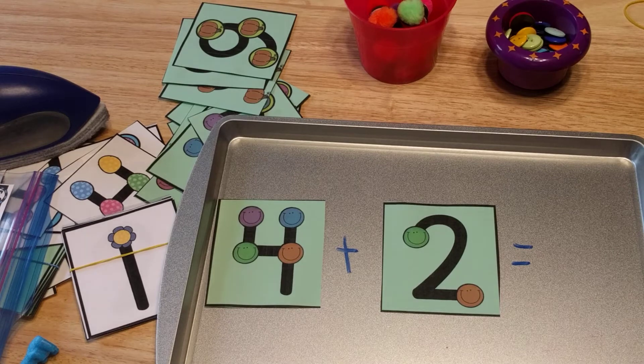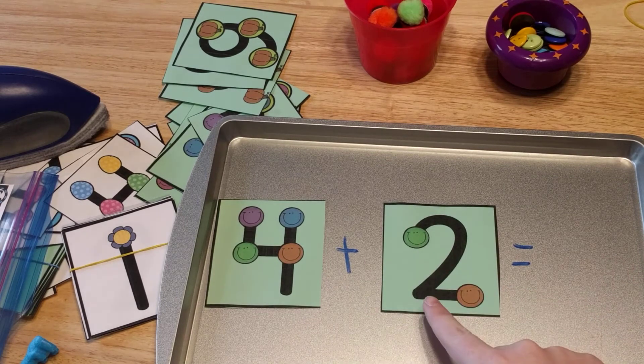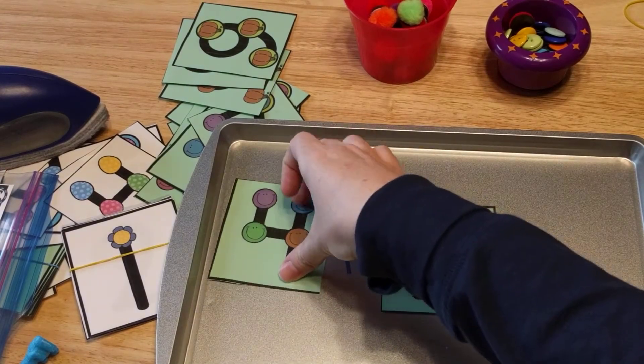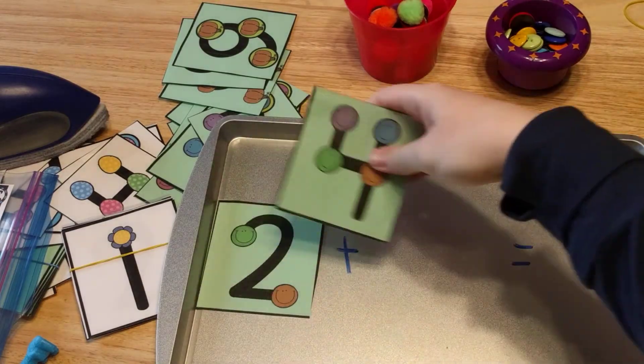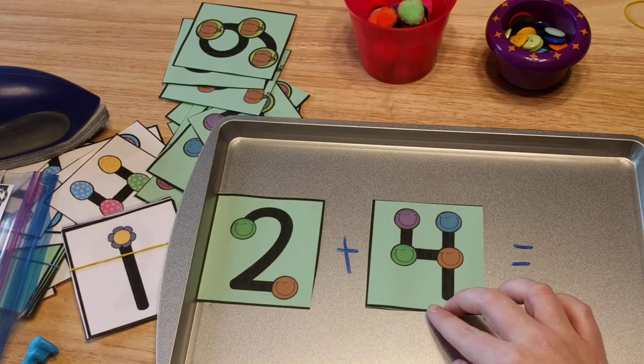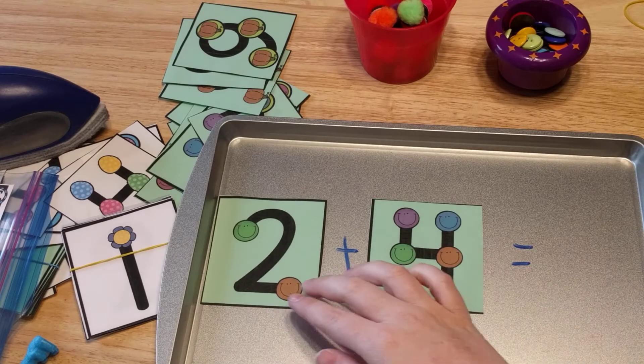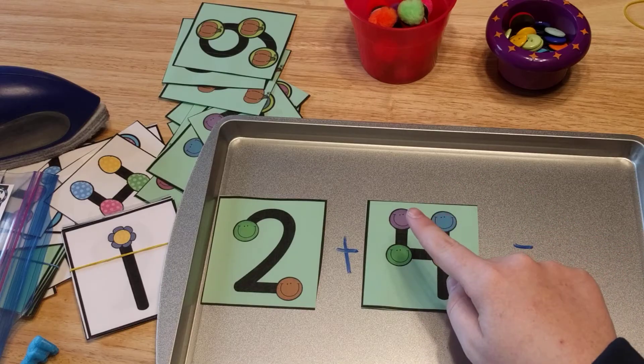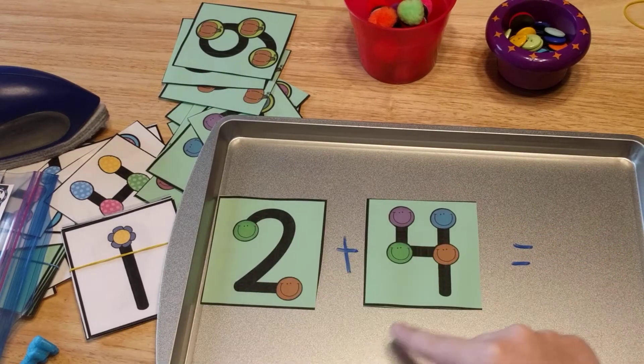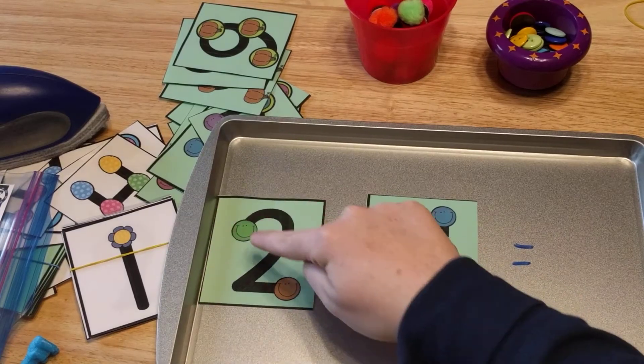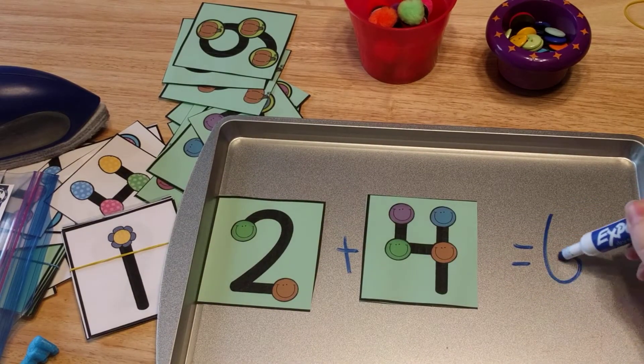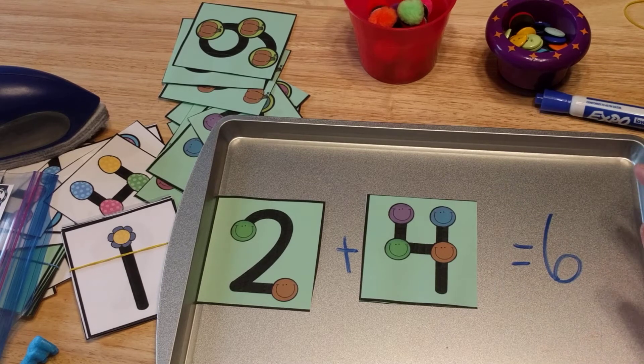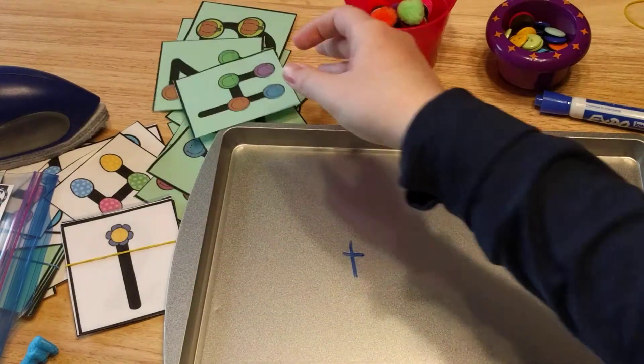And then what I teach my kiddos is to start with the bigger number and then to count up. Now, this one's already in order. So it's already the bigger number. But I teach them, even if the bigger number's on this side, you still start with a bigger number and then count up. So two plus four. I would touch this number with my finger. So I would say four. And then I'm going to touch the touch points and count up. So four, five, six. My answer is six. Okay. So the touch points are really, really helpful for addition.